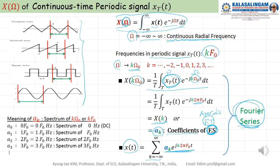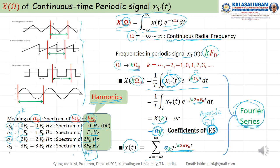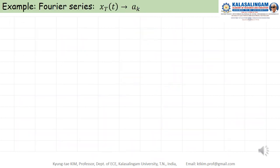Now let's think about the meaning of a_k. The meaning of a_k is the spectrum at k·ω0, or equivalently k·f0. For example, a_0 means the component at 0 Hz (DC), a_1 means the component at f0, a_2 means the component at 2·f0, and so on. We call these harmonics: 0, f0, 2·f0, 3·f0, 4·f0, and so on.